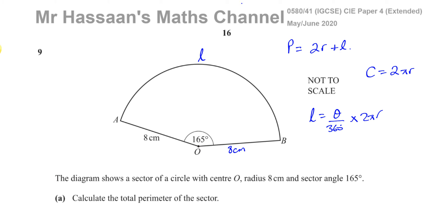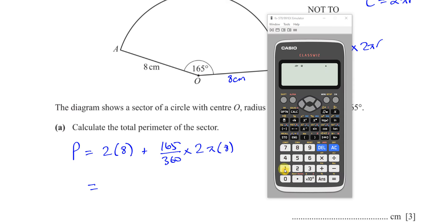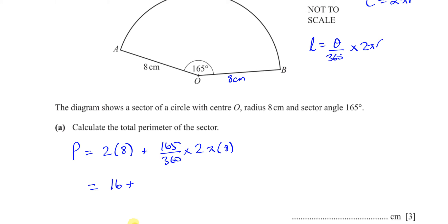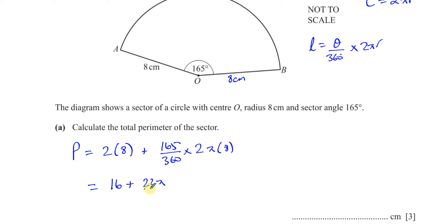We have all the information to find the perimeter: 2 times 8, plus 165 over 360 times 2 times π times 8. Expressing the arc part in terms of π gives us 22π over 3. So the perimeter is 16 plus 22π over 3.